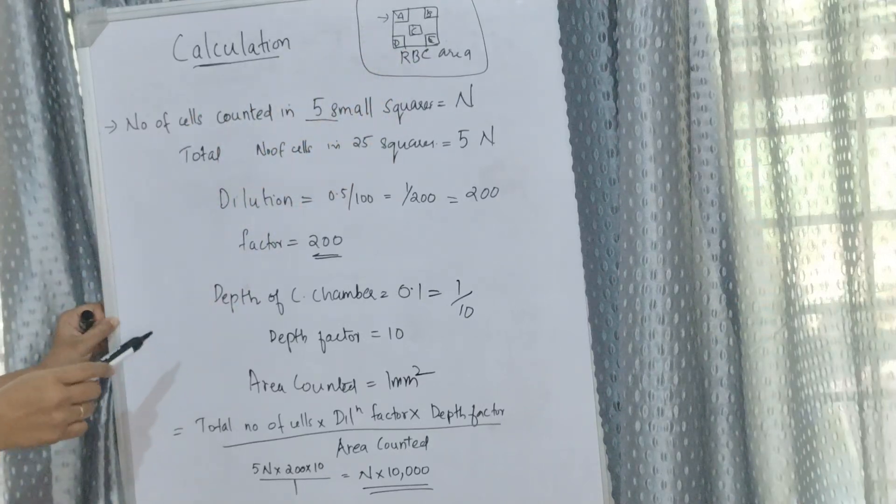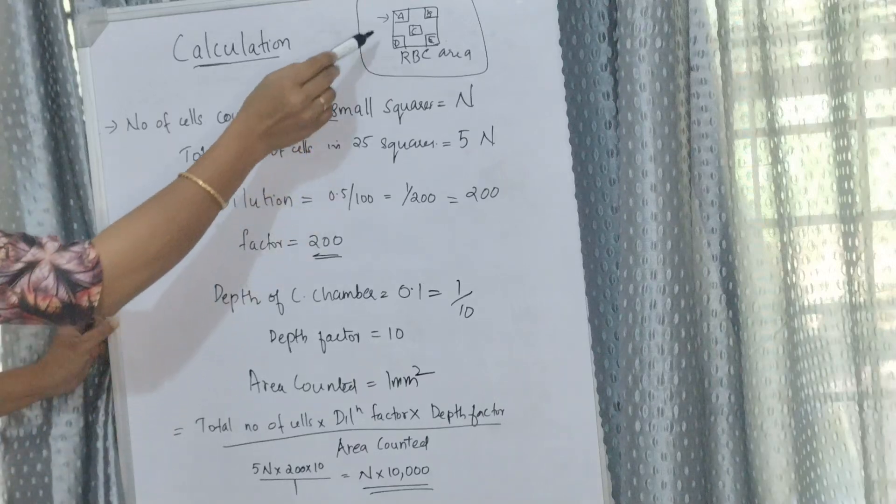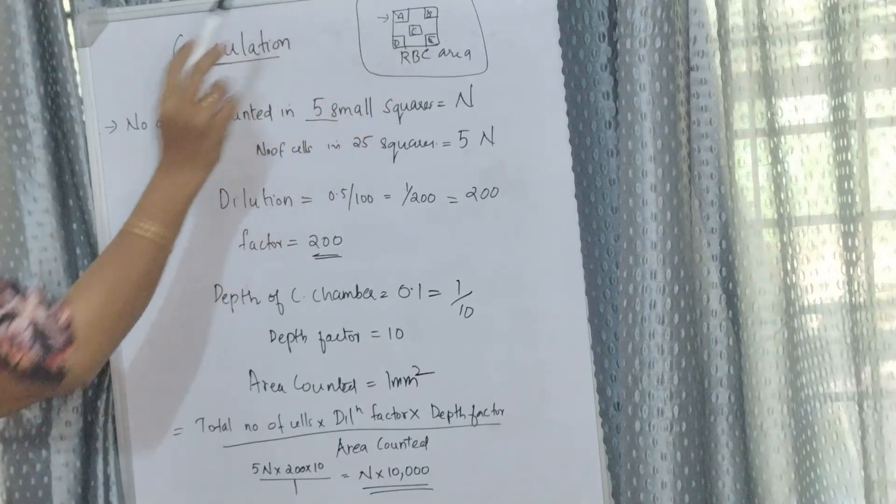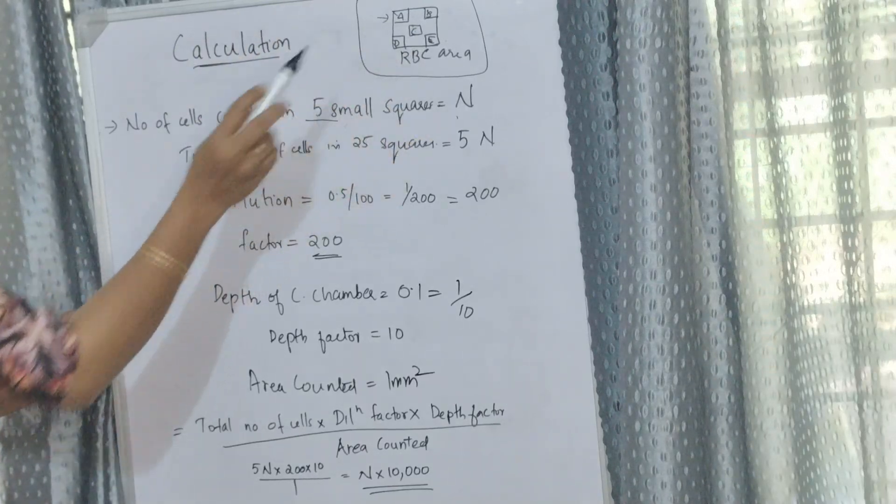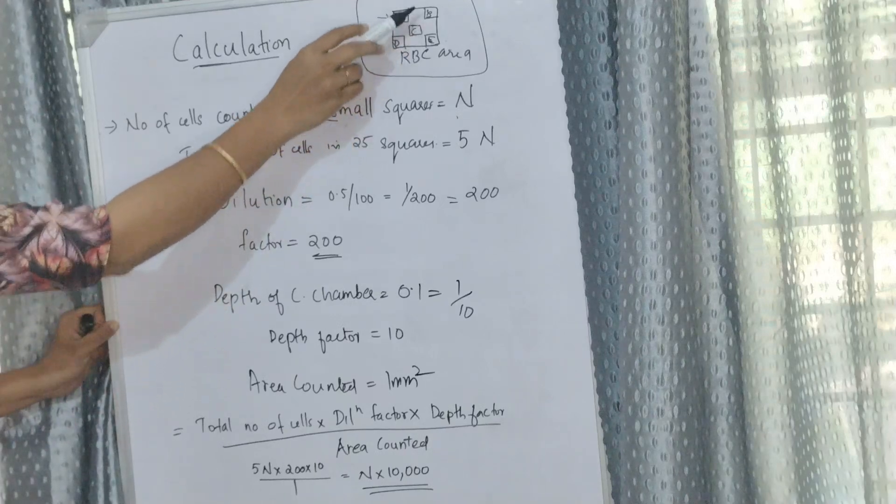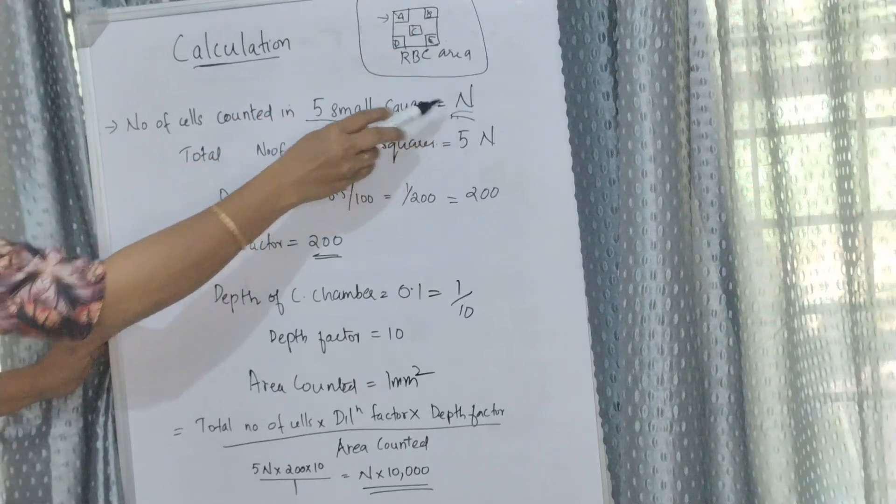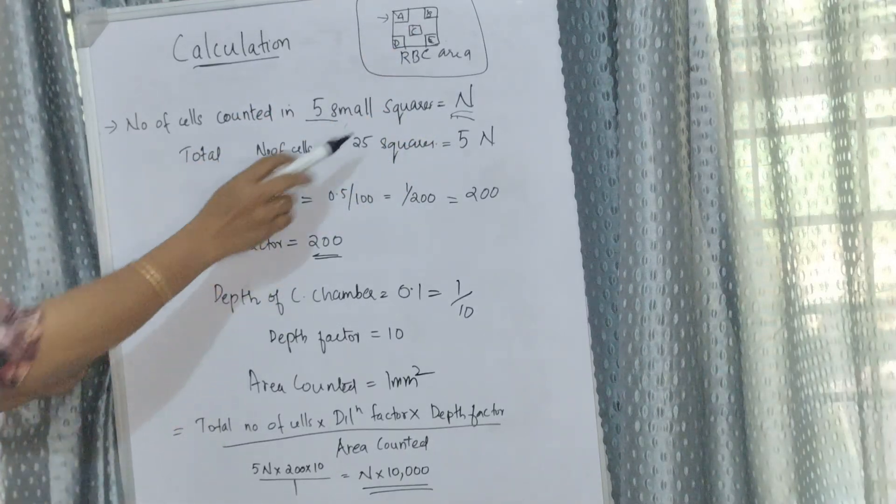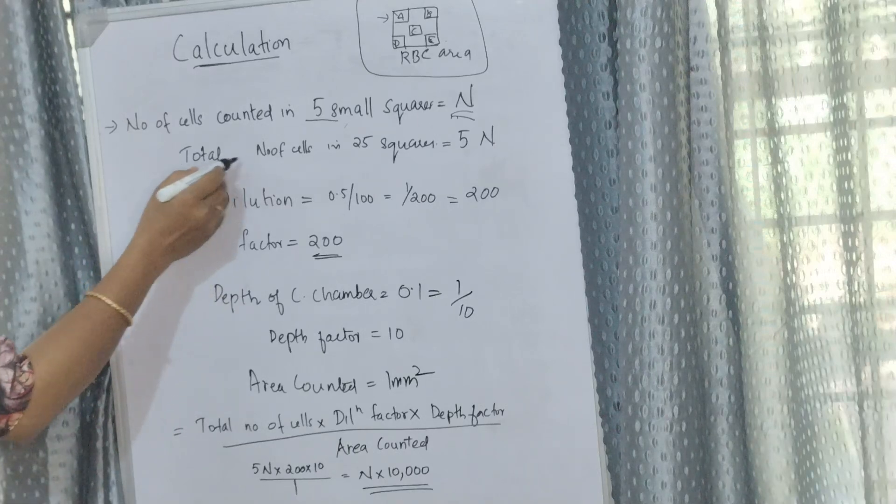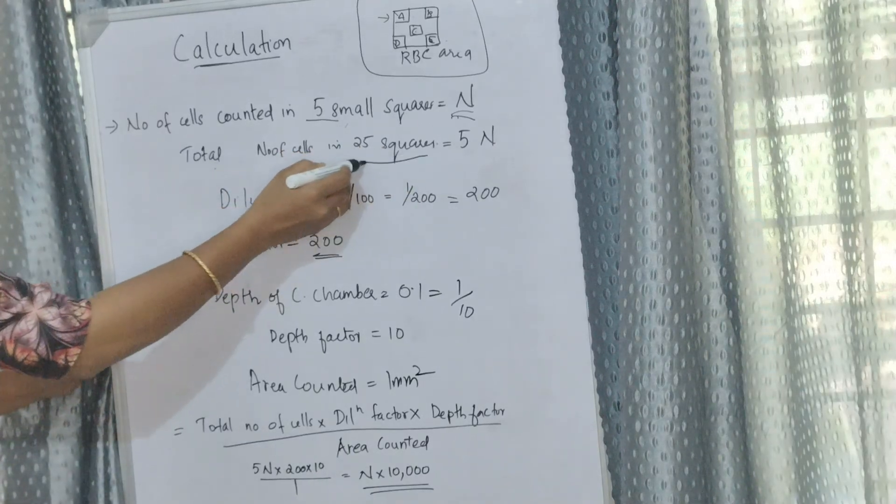The whole central area is the RBC area, but we are only counting five squares: four corner and central square. It is equal to N, and the total number of cells in the 25 squares is 5N.